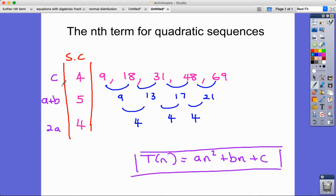So what I've actually done is I have created a special column which is now telling me that c equals 4, a+b equals 5, and 2a equals 4. Now you can see these a, b, and c are sitting down here, and this is the key then to finding the rest of my nth term. I know that c equals 4, so that's done.